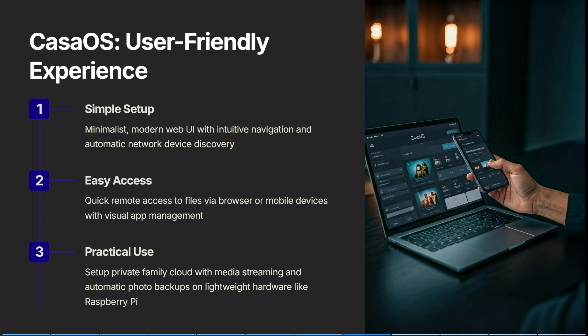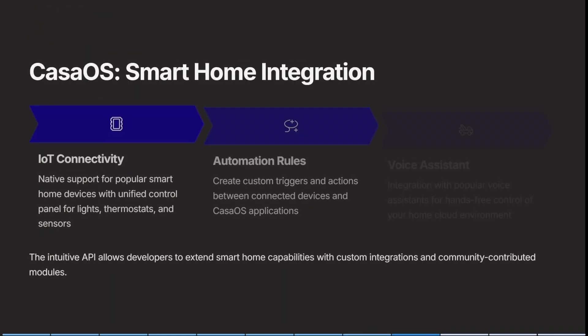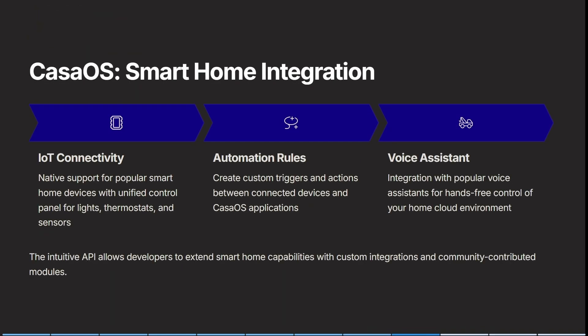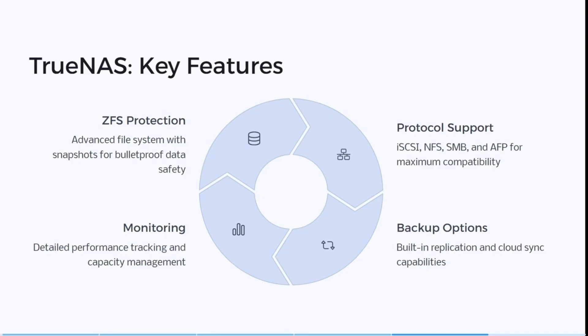With visual app management you can set up private family clouds with media streaming and automatic photo backup on lightweight hardware like Raspberry Pi. It has native support for popular smart home devices with unified control panels for lights, thermostats, and sensors. You can create custom triggers and actions between connected devices and CasaOS applications. It integrates with popular voice assistants for hands-free control of your home cloud environment, and the intuitive API allows developers to extend smart home capabilities with custom integrations and community-contributed modules. Detailed performance tracking and a built-in cloud sync give you multiple backup options.